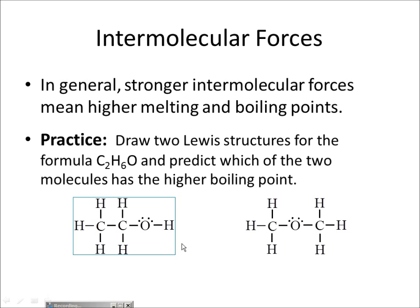Consider two molecules with the same mass, same elements, and same bonds, just with different connectivity. This is ethanol — which will get you drunk — and this is dimethyl ether. Ethanol has a higher boiling point, higher melting point, and lower vapor pressure than dimethyl ether, just by looking at it — because there's hydrogen bonding between one ethanol molecule's lone pair and another ethanol molecule's hydrogen bonded to oxygen.